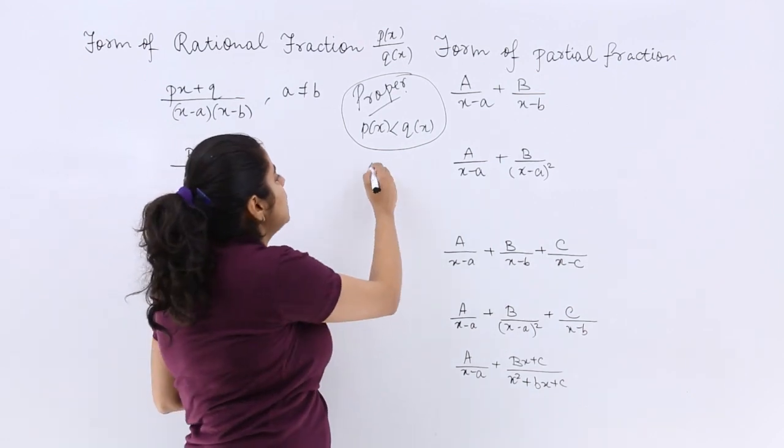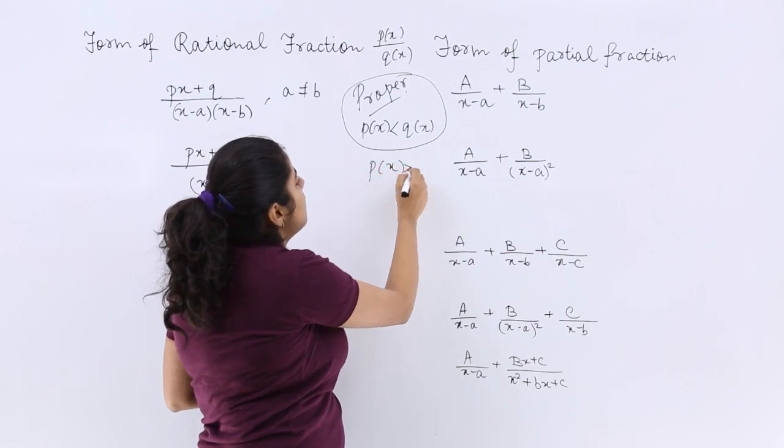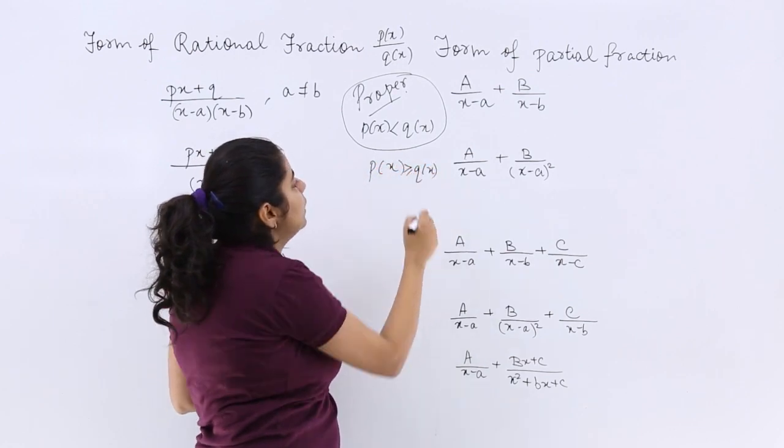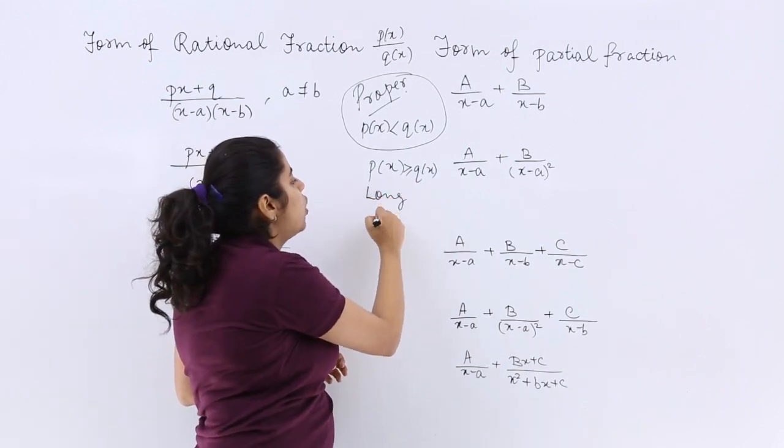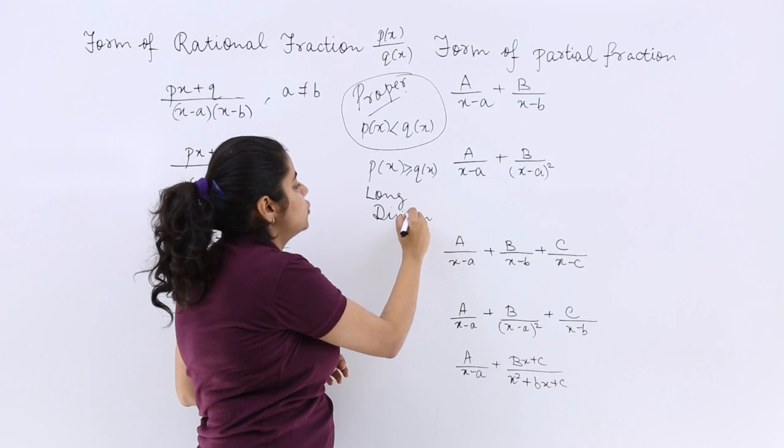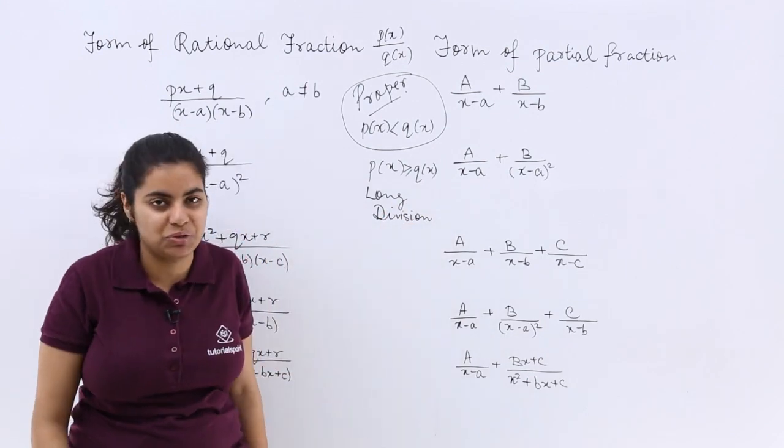But if the fraction is not a proper rational number but an improper rational number—that means the degree of the numerator is either greater than or equal to the degree of the denominator—then you would go by the long division method and other methods that were suggested as we started in the previous videos.